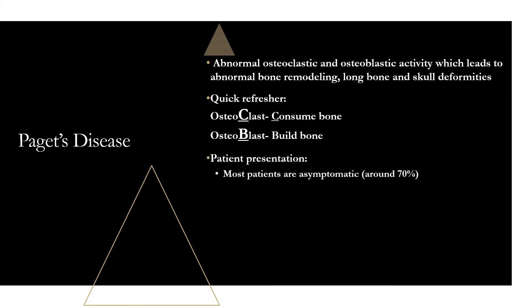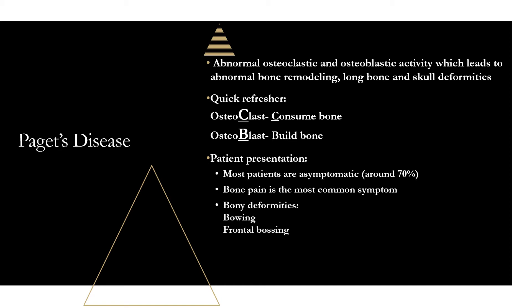Most patients are actually asymptomatic, around 70%, and it may just be an incidental lab or x-ray finding. When patients do have symptoms, bone pain is the most common, normally due to microfractures in irregularly formed bones. They may also have spinal stenosis. Bony deformities include bowing of the legs around the long bones of the femur and frontal bossing — a protuberance of the skull at the forehead. The most common sites are the femur and pelvis in about 75% of patients, and the skull in about 37%.